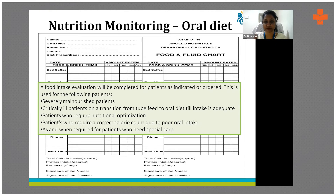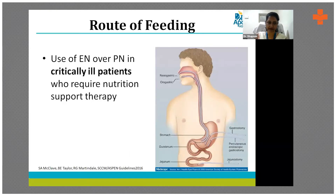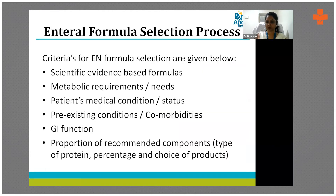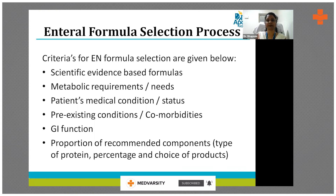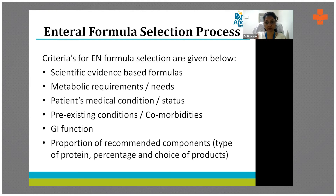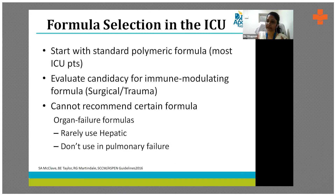The next route of feeding is enteral nutrition — we always prefer to feed the patient through the tube rather than parenterally. The criteria for selecting an enteral formula include: scientific evidence-based formula selection, metabolic requirements and needs, the patient's medical condition, pre-existing conditions and co-morbidities, and their GI function. If the gut is very finicky, a peptide formula may suit them better than a polymeric formula, and the proportion of components — high protein or low carb — is chosen depending on their condition.